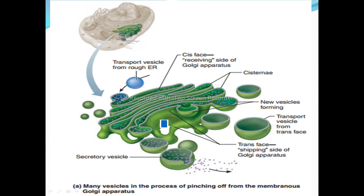You can see things like the ribosome and the endoplasmic reticulum, the ribosome and the endoplasmic reticulum, and mitochondria. This is the same as the Golgi complex and the Golgi apparatus.